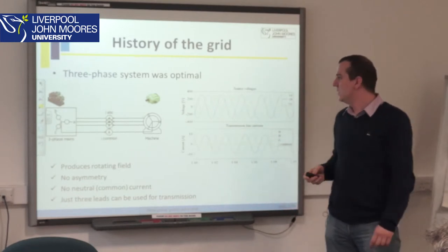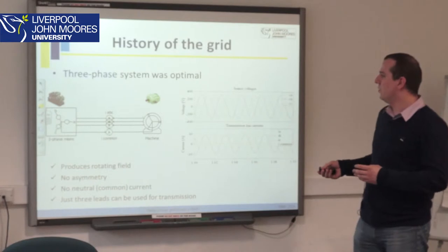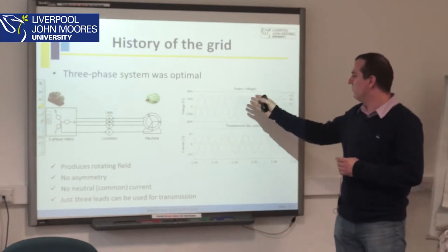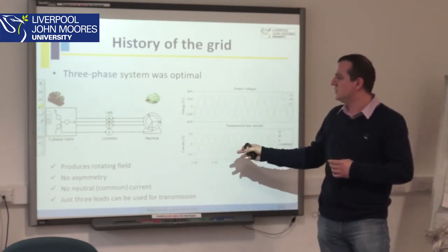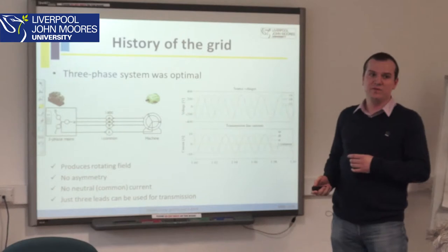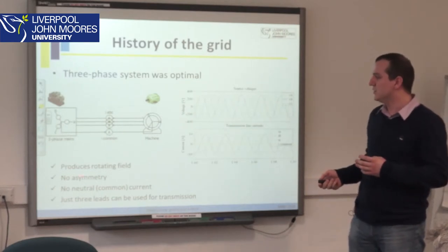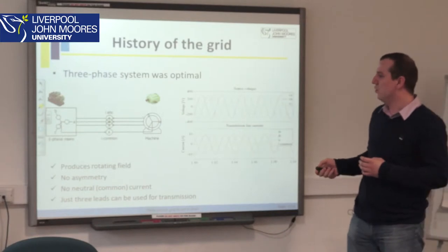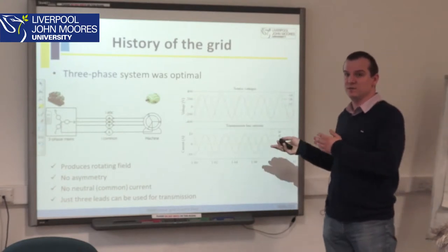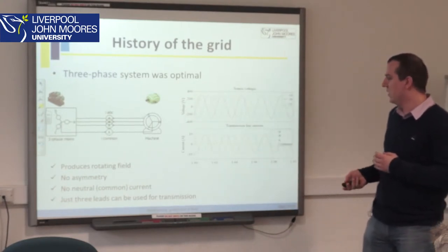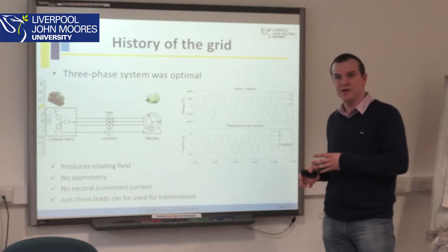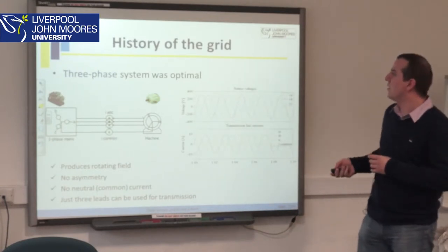With a three-phase system, none of those problems arise. The system is ideally symmetrical — the current is the same in all three phases, it can produce a rotating field without any problem, and there is no asymmetry. Even more importantly, in the neutral common branch there is no current, so we can remove that wire from the system entirely. This means we achieve the full range of capabilities with the minimal number of wires. That is how the three-phase system was established.